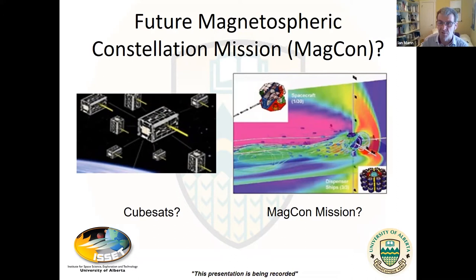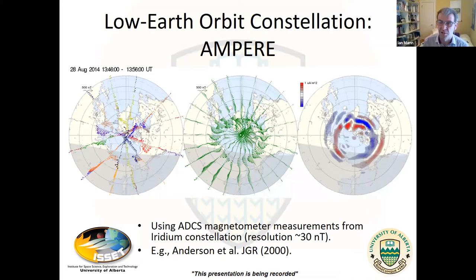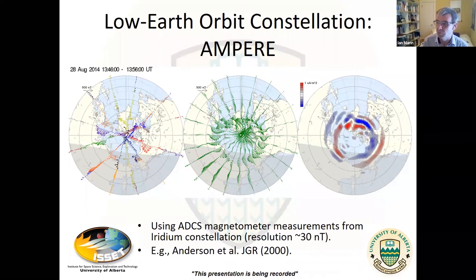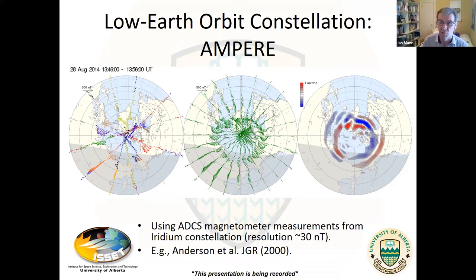One constellation worth mentioning — because Brian Anderson and Colin Waters might be upset if I don't — is the beautiful measurements from the AMPERE constellation in low Earth orbit, using ADCS magnetometer measurements with limited resolution but fantastic global coverage. I want to take one step below that and ask: what can be done underneath with ground-based measurements?